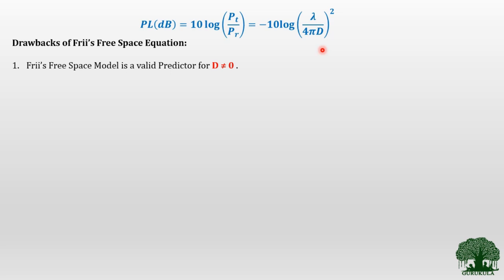The second drawback is that we have assumed only a line-of-sight signal. But in most practical situations, we will not experience only line-of-sight — we will have multipath components as well. We will come to the second drawback later; first we will address the first drawback, which concerns what will be the valid case for D.